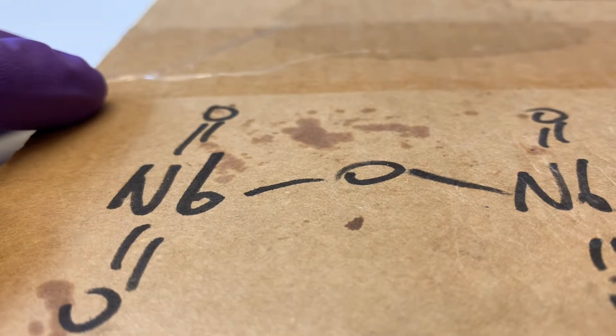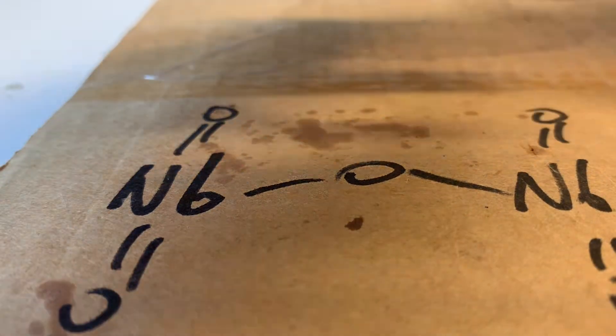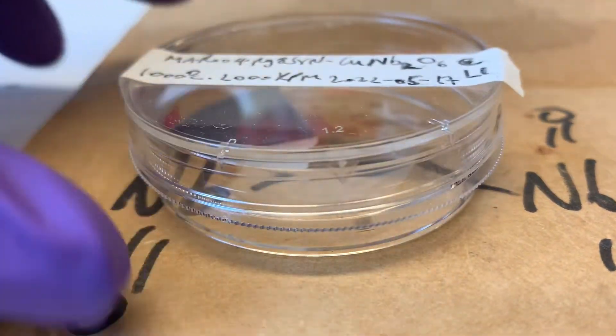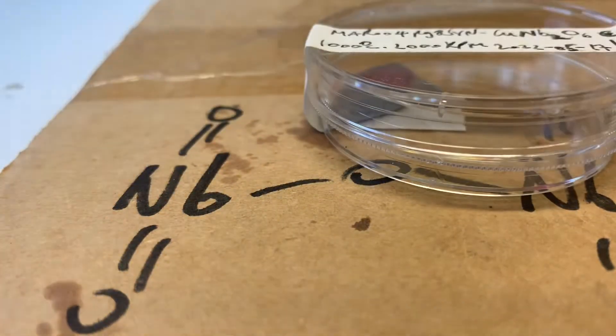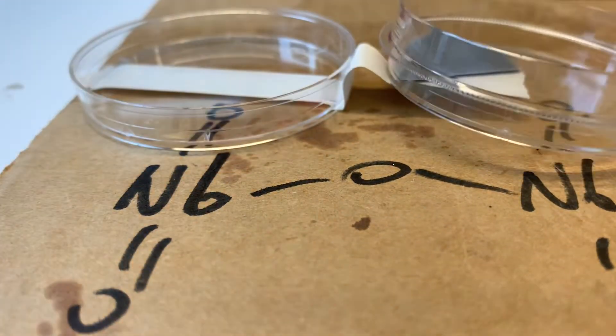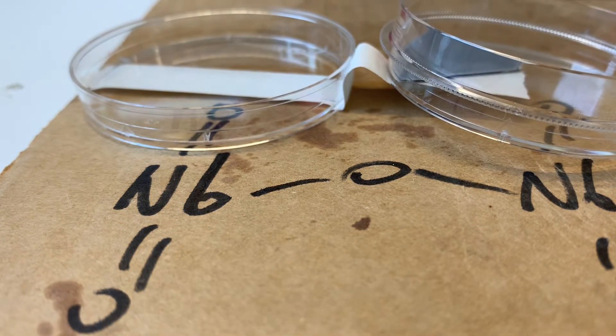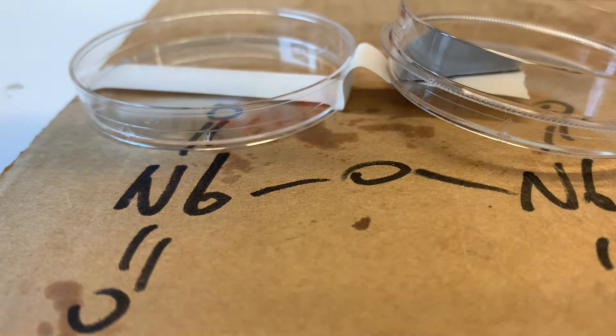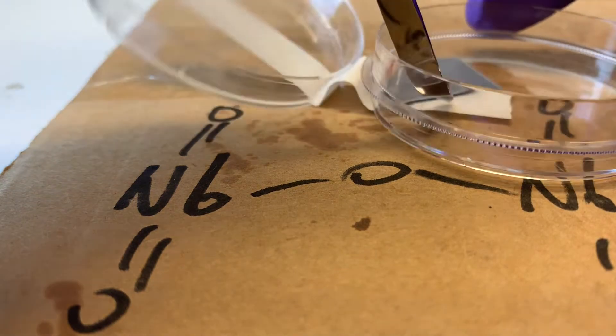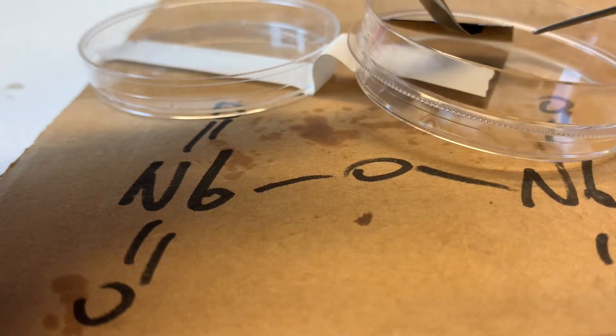Anyway, so you will have a film like I have here. And to make the electrode, you will have to cut the film. And I'll show you how I cut it here.